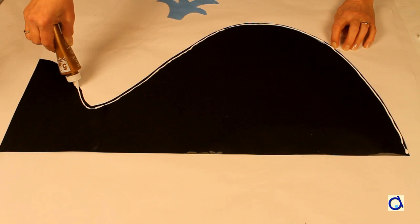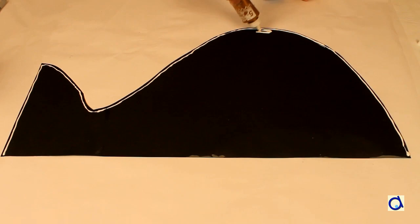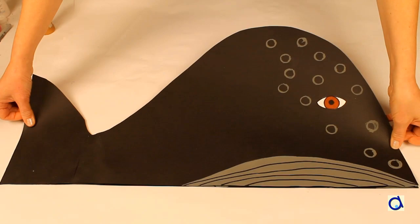To assemble the whale, place one of the halves with the unpainted side up. Apply glue all around except along the bottom edge. Put the other half whale on top without forgetting to put the spray of water between the two sides of the whale and let dry.